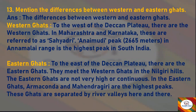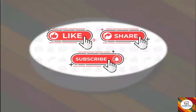Next question: Mention the differences between Western and Eastern Ghats. Western Ghats: To the west of the Deccan Plateau are the Western Ghats; in Maharashtra and Karnataka these are referred to as Sahyadri. Anai Mudi peak at 2,665 meters in the Anamalai Range is the highest peak in South India. Eastern Ghats: To the east of the Deccan Plateau are the Eastern Ghats; they meet the Western Ghats in the Nilgiri Hills. The Eastern Ghats are not very high or continuous; Arma Konda and Mahendragiri are the highest peaks, and these ghats are separated by river valleys.